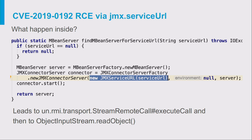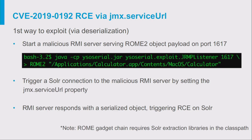When Solr tries to register on the RMI registry, it tries to send a serialized object using the RMI protocol. The first way to exploit this is to create a malicious RMI registry — for example using the YSoSerial tool — and reply to the Solr server with an exception containing a serialized object to trigger remote code execution. The disadvantage of this attack is that we need a proper gadget chain: we can use a ROM gadget chain or a pure JDK gadget chain if our Solr server is outdated enough, and it ultimately leads to calculator execution.